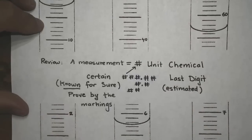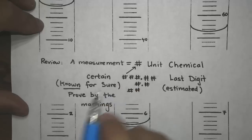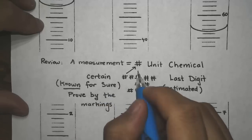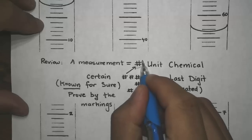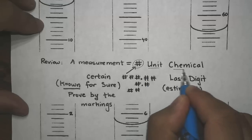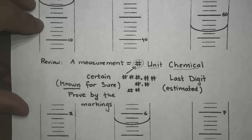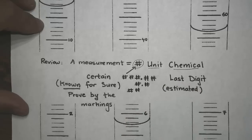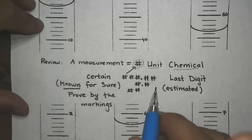In the previous lessons, we learned that a measurement will always include three parts: the number, the unit, and the chemical that we measure. We talked about how a unit has a value of its own based on the prefix, like milli and kilo. In this lesson, we are going to focus on the number part.